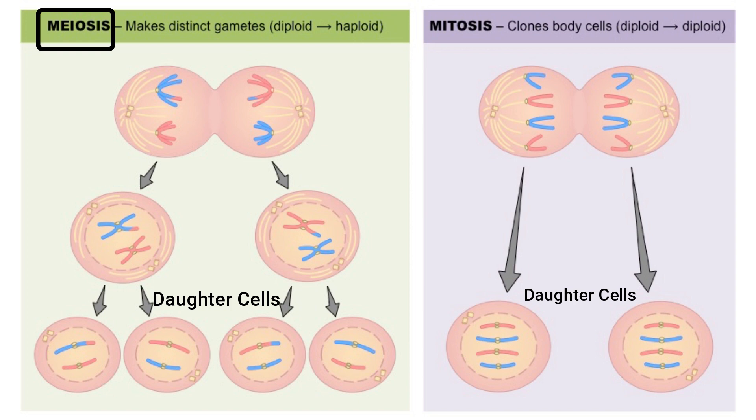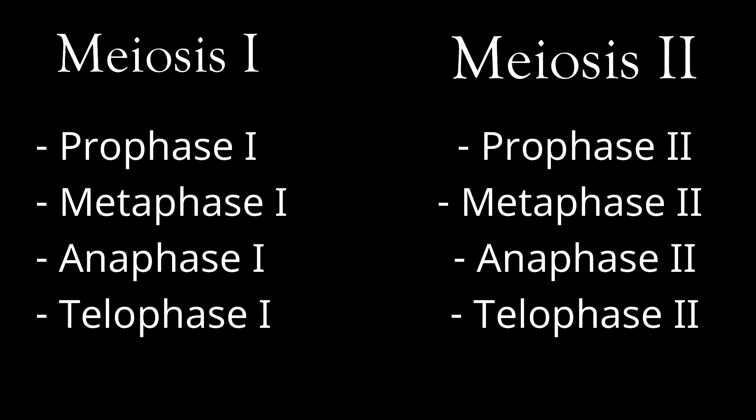Like mitosis, meiosis also goes through stages of division, but because the goal of meiosis is to produce haploid cells, which only have one set of chromosomes, from diploid cells, which have two sets of chromosomes, cell division occurs twice. The first stage is called meiosis I, and the second stage is called meiosis II. Each stage contains prophase, metaphase, anaphase, and telophase.